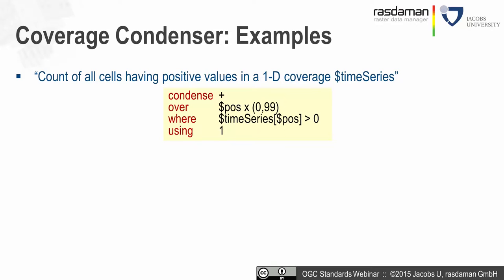For example: to count all cells having positive values in a one-dimensional coverage $timeSeries, we use condense plus over an iteration from 0 to 99. In the where clause we state that the time series position should be greater than zero. If greater than zero, the using expression evaluates to 1, incrementing the counter. If not fulfilled, nothing is added. At the end we get the count of all positive cells.